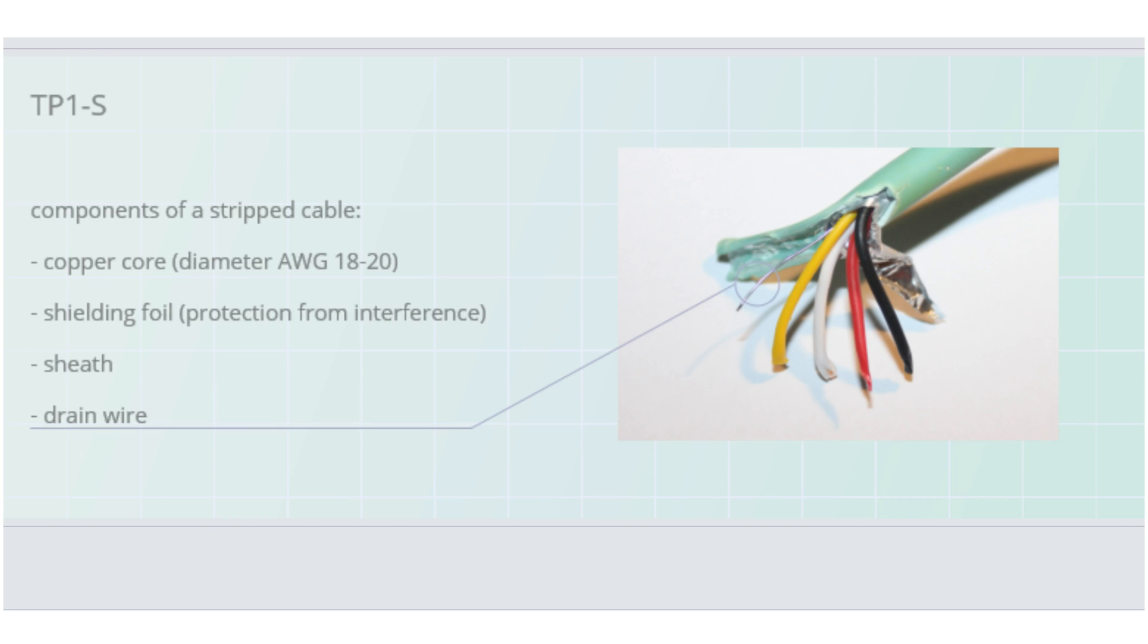There is also a drain wire which can be used to ground the cable and drain away interference. The cable is used to connect independent KNX devices together.